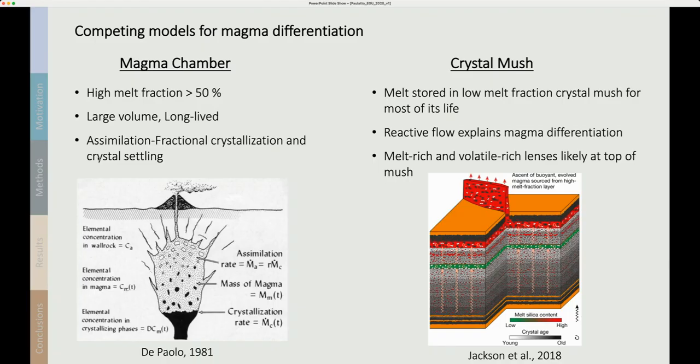There are two main competing models for how magma is differentiated in arc crust. The classical magma chamber model predicts that magma is stored in large-volume, long-lived, high-melt fraction magma chambers and that differentiation happens by assimilation and fractional crystallization followed by crystal settling.